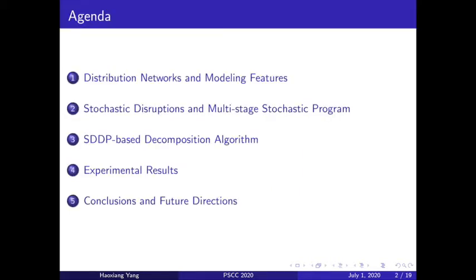We're going to first introduce what is a distribution network and what realistic modeling features we are going to include. Then we are going to talk about what is a stochastic disruption, how we link that disruption back to electricity contingencies, and we're going to formulate a multi-stage stochastic program for this problem. To solve this problem we are proposing a stochastic dual dynamic programming based decomposition algorithm and then show the experimental results. We're going to conclude this presentation with some insights and future directions.